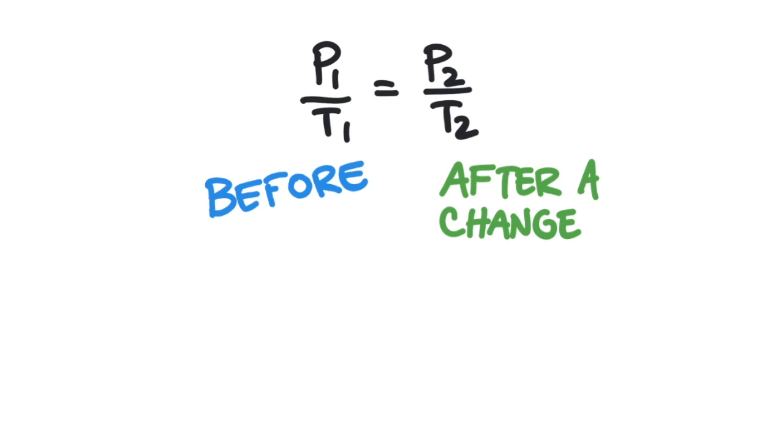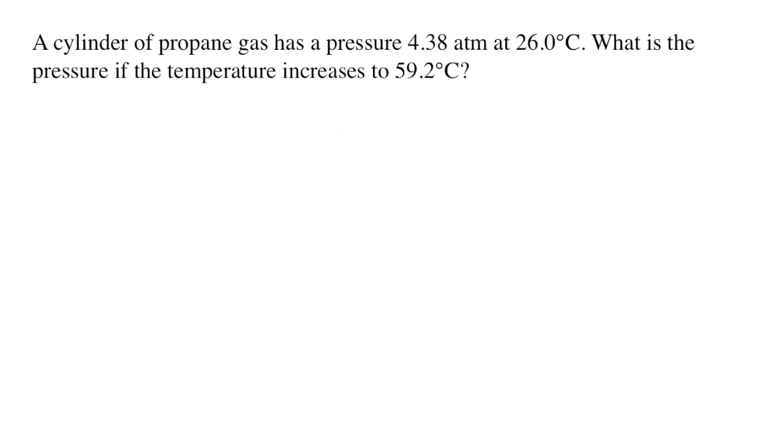This equation has four variables and for chemistry homework, you are usually going to be given three of the variables and then you'll solve for the fourth unknown variable. Here's the kind of homework question you would need to solve for your chemistry class.